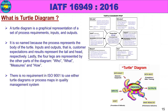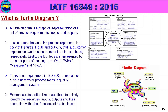There is no requirement in ISO 9001 or IATF 16949 to use turtle diagrams or process maps in a quality management system. However, external auditors often like to see them to quickly identify the resources, inputs, outputs and their interaction with other functions of the business. Turtle diagrams and process maps help identify the inputs, outputs, and processes.